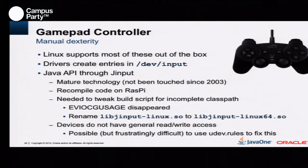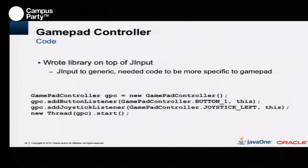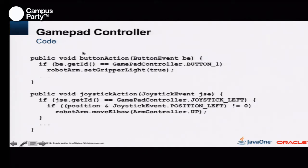For the game controller, we use a library that has been around for a while called JInput. It's very mature — it hasn't been touched since 2003. We just recompiled it for the Raspberry Pi and the game controller integration is very simple: you create an object, say you want to listen to changes — for example, if you push buttons or move the joystick — you start a thread that is listening, and then you handle the action: if something happened on a button, do something; if something happened on the joystick, do something.